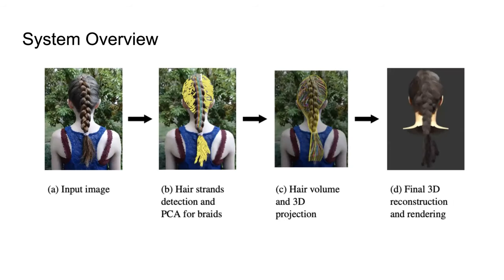Here is the overview of our system. The input is a single hair image with no constraints on the view. We first segment the braided region, then apply our braided unit segmentation method to extract the braided unit information and divide the hair region into braided and non-braided regions. In the braided region, we recover the 2D braided structure information. In the non-braided region, we extract 2D hair strands. Then we generate a 3D hair volume based on the silhouette of the hair region. Finally, we project 2D braids and 2D hair strands onto the 3D hair volume to obtain a 3D braided hairstyle model.